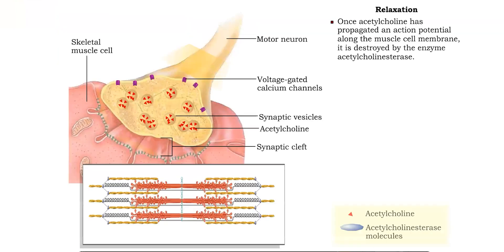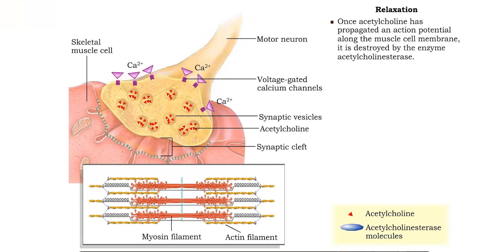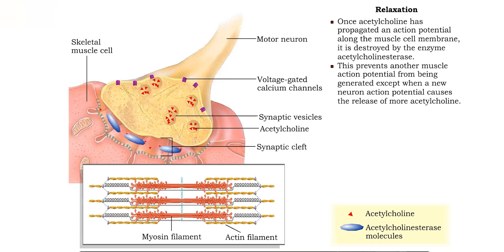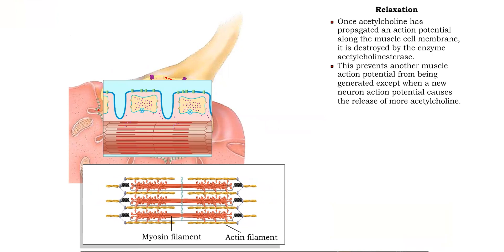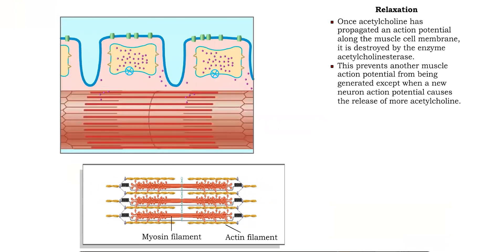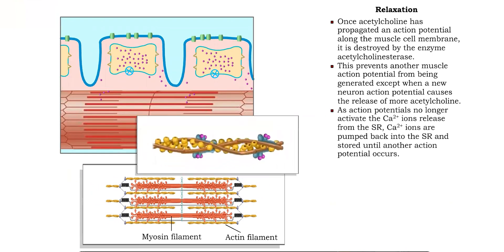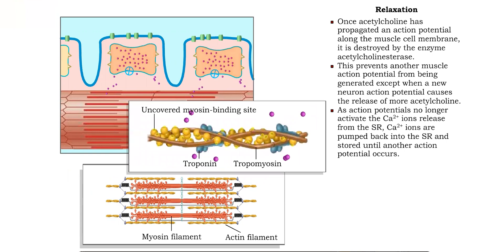Almost as soon as acetylcholine has had its effect on the membrane of the muscle cell, it is destroyed by the enzyme acetylcholinesterase. In this way, a single muscle action potential is produced for every neuron action potential. When muscle action potentials are no longer generated, the release of calcium stops.